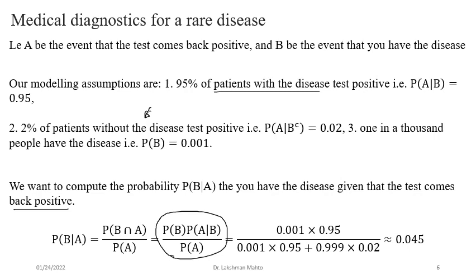We apply Bayes' rule directly: P(B|A) = P(B) × P(A|B) / P(A). We can calculate P(A) using the total probability concept. After simplifying this ratio, we find that the probability of having the disease given that you tested positive is 0.045 — about 5%. So despite testing positive, it is a very rare chance — you don't have to be afraid.